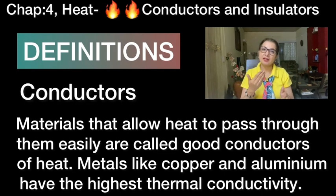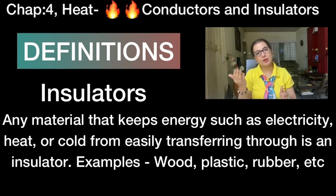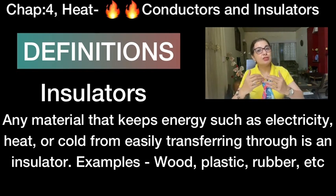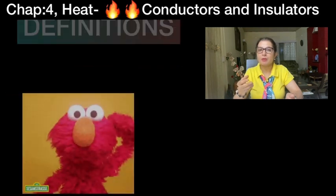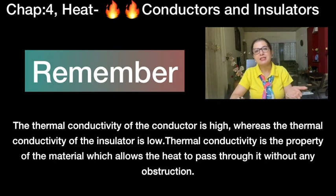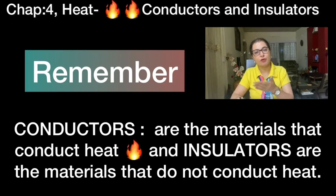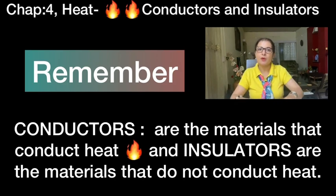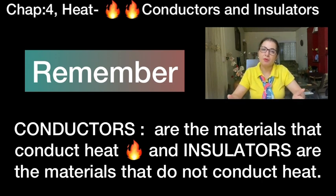And what is the opposite? Insulators are all those materials which do not transfer heat. The definition is the same — you just include the words 'do not' when writing the definition of insulators. Conductors conduct or transfer heat — for example, all metals. Whereas insulators do not transfer heat — examples include wood, rubber, and plastic.